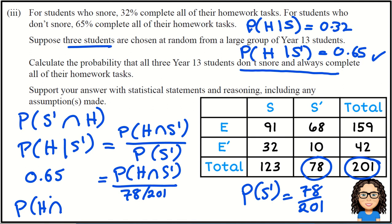So rearranging that to get the probability of doing homework and not snoring, that is going to be 78 out of 201 multiplied by 0.65. So I'm just going to jump onto the next slide for a moment.